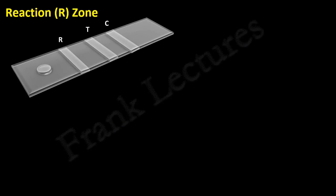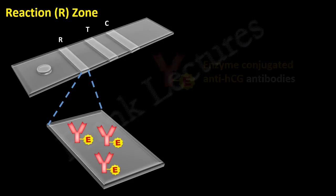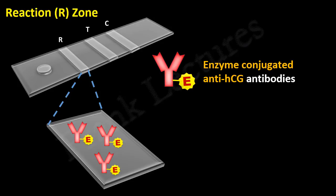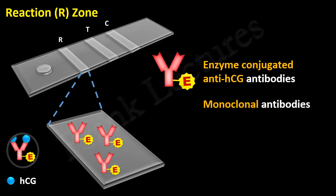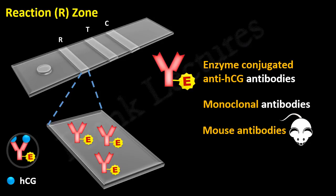If we zoom in, we find that in the reaction zone, enzyme-conjugated anti-HCG antibodies are present. These antibodies recognize and bind to the HCG molecules. They are monoclonal, meaning they are specific to a single epitope on the HCG molecule. These monoclonal anti-HCG antibodies are produced in mouse, and are therefore also called mouse antibodies. A reporter enzyme, designated by the letter E, is covalently attached to each of these antibodies. Importantly, these antibodies are loosely attached to the pregnancy strip.